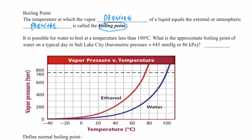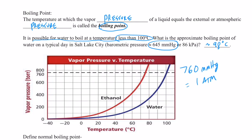It is possible for water to boil at temperatures higher than 100°C by increasing the pressure, and also possible to boil at less than 100°C by decreasing it. For example, here in Salt Lake City the atmospheric pressure is about 645 mmHg, and water boils at about 98°C. At sea level, where atmospheric pressure is about 760 mmHg — which we call one atmosphere — the boiling point of water equals 100°C.